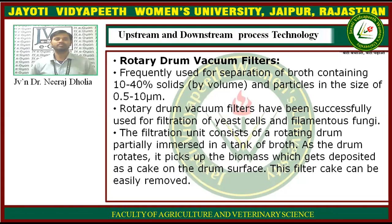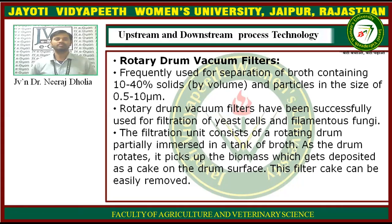Next is rotary drum vacuum filters. These are frequently used for separation of broth containing 10 to 14% solids by volume and particles in the size of 0.5 to 10 micrometers. They have been successfully used for filtration of yeast cells and filamentous fungi. The filtration unit consists of a rotating drum partially immersed in a tank of broth. As the drum rotates, it picks up the biomass which gets deposited as a cake, and this filter cake can be very easily removed.